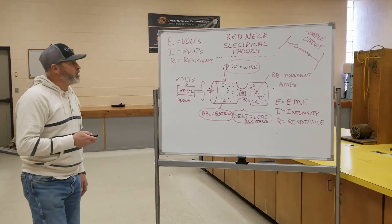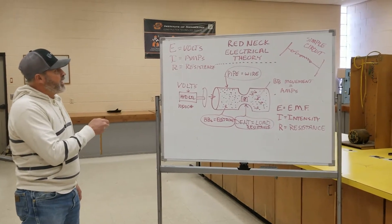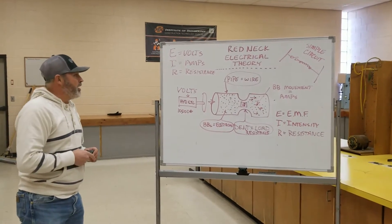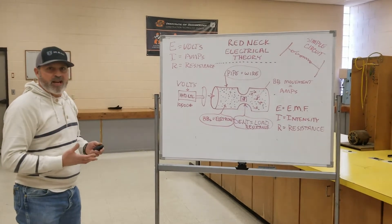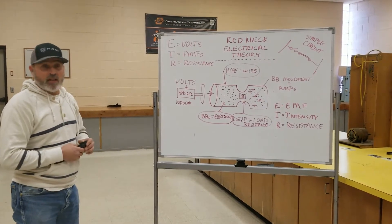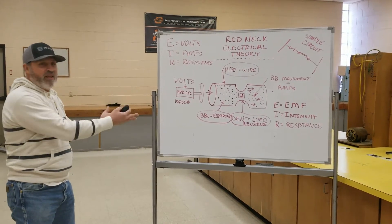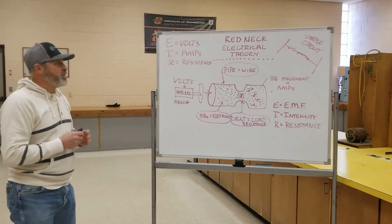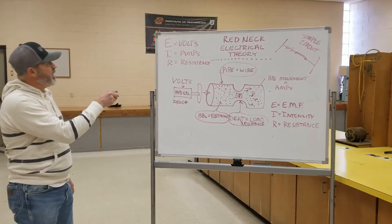In this episode, I'm going to talk about the three major aspects of electricity. I call it my redneck electrical theory. I like making things as down-to-earth as I can. Electricity is one of those things that a lot of people have trouble understanding because it's invisible — you can't see it, you can't touch it. Through years of teaching, I've come up with this. The main principle here is for you to leave this video understanding what E, I, and R fully represent and how they affect an electrical circuit.